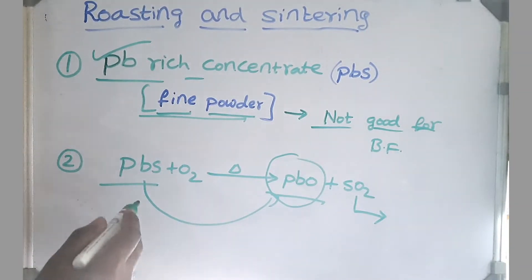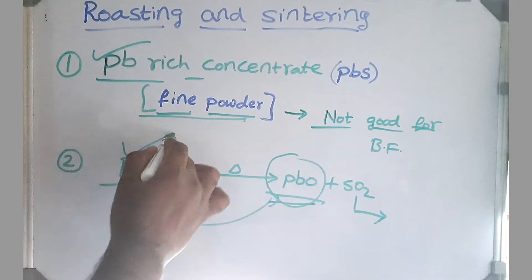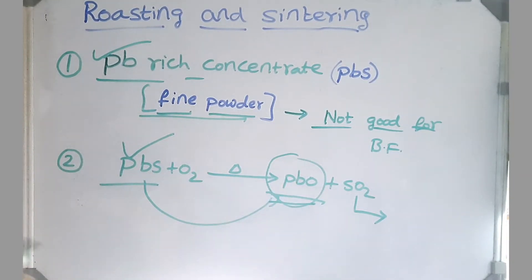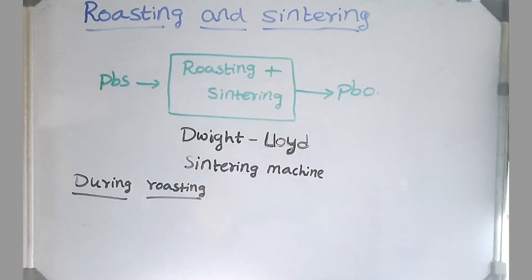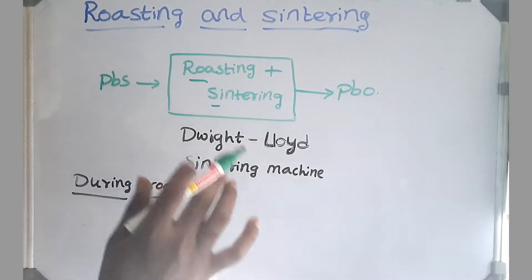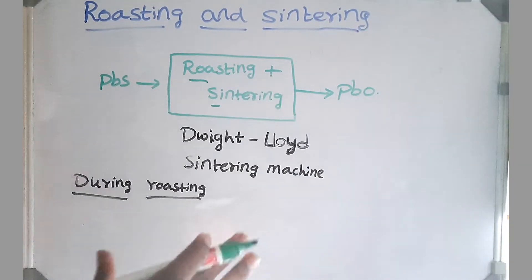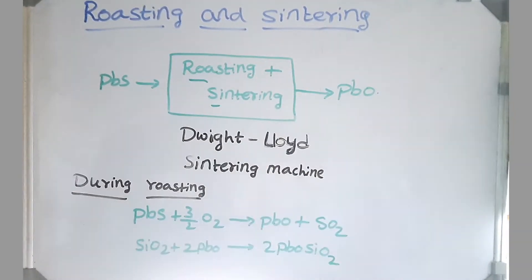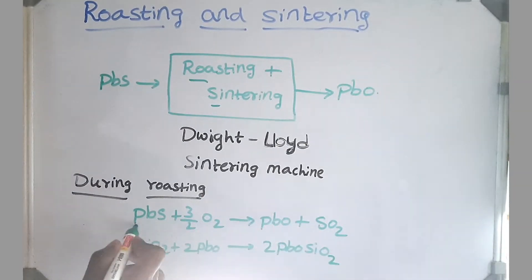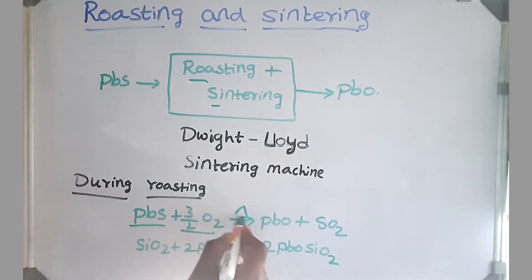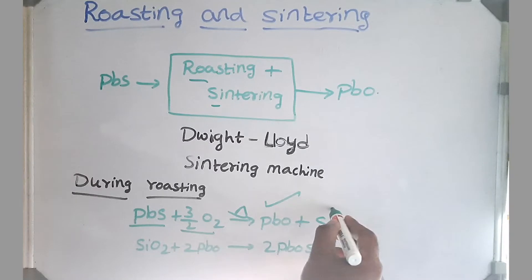I want you to list out the points why oxides are more reducible than sulfides in our Metallurgy Crisp telegram group. Both roasting and sintering is done in Dwight-Lloyd sintering machine, both processes at once. These are the reactions during roasting. Our lead sulfide galena reacts with oxygen at high temperature producing lead oxide and sulfur dioxide.